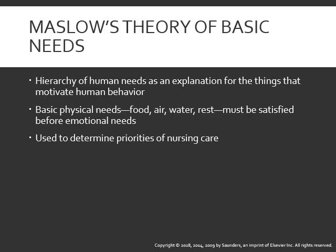Maslow's hierarchy takes into account the social needs and personal needs of the individual. In acute illness, which needs are most often compromised? Our basic physical needs, which include food, air, water, and rest. In chronic illness, all of a person's needs are affected.